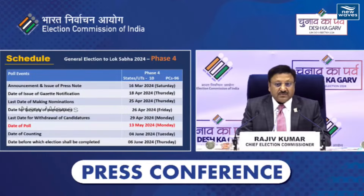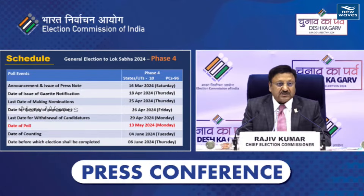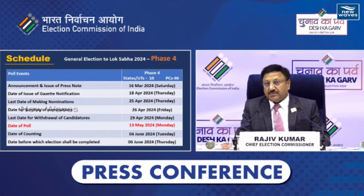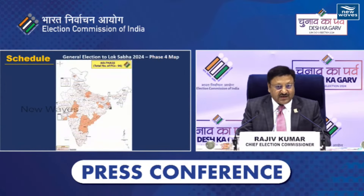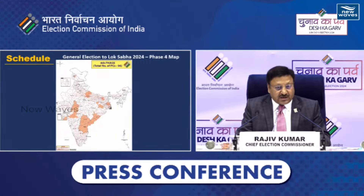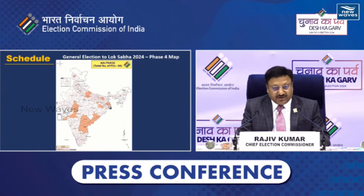Phase 4: 18th April ko Gazette notification hoga aur date of polling would be 13th of May. Date of counting in the entire country would be 4th of June — for all by-elections, assembly elections, and parliamentary elections. Is samay tak Telangana, Andhra, Odisha start ho jaayenge, aur entire South India, entire Western India, aur Northeast complete ho chuka hoga.